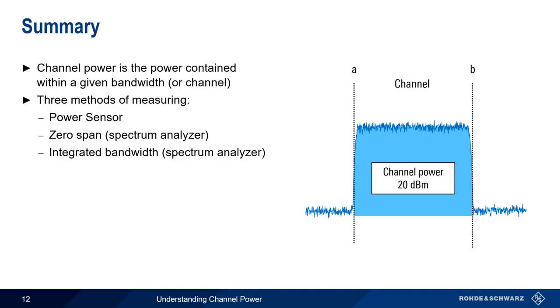Since channel power is a power measurement, our detector type should always be set to RMS when we measure channel power with a spectrum analyzer. This concludes our presentation, Understanding Channel Power.